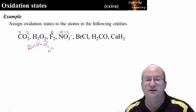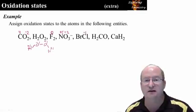BrCl, these are two elements, two halogens. The higher one in the halogen column is the chlorine. So this is assigned a minus one charge, and this is assigned a plus one charge.